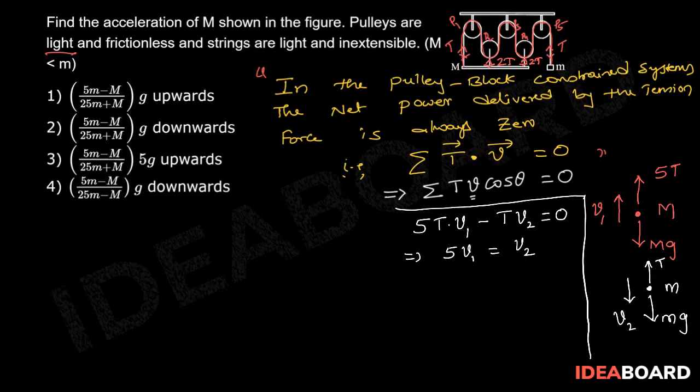So, on differentiating this equation, we get 5 times A1 is equal to A2. Let this be the second equation.